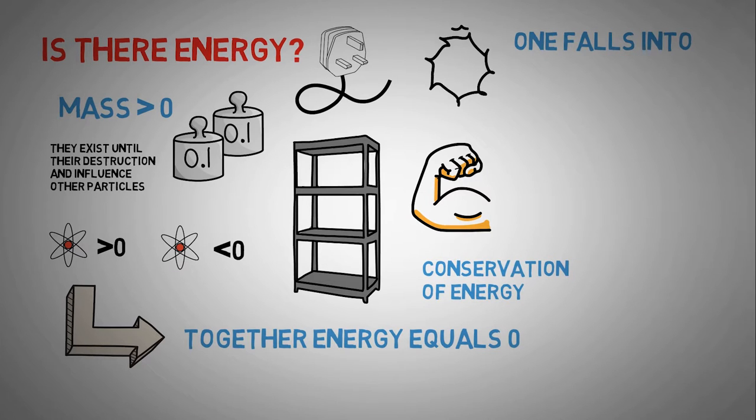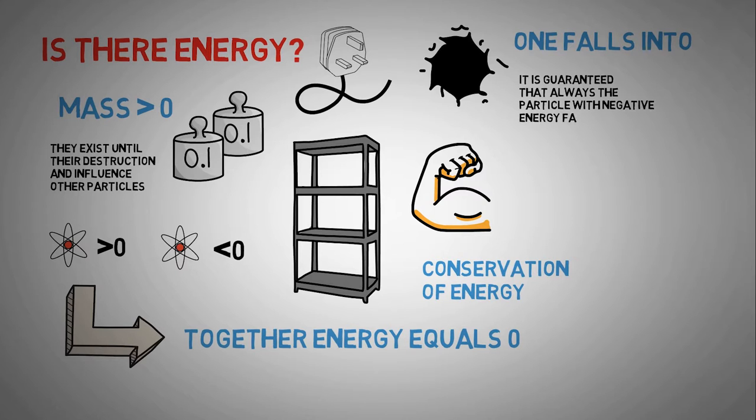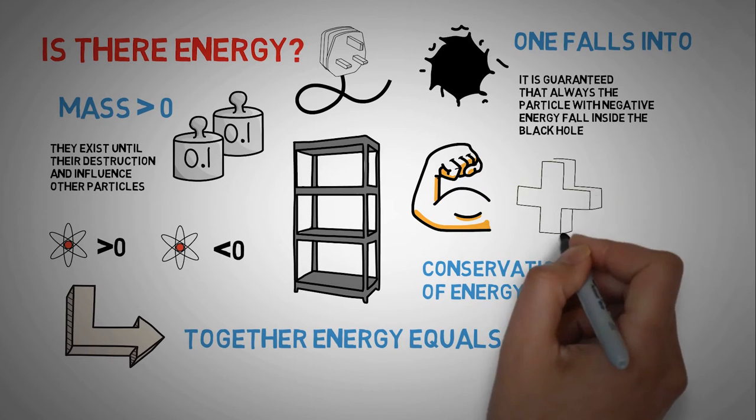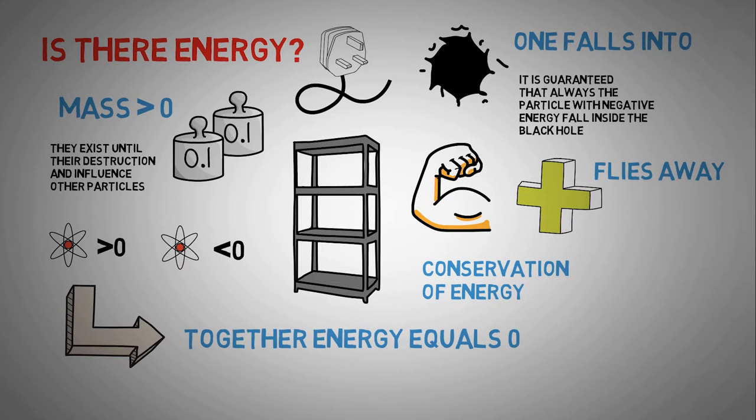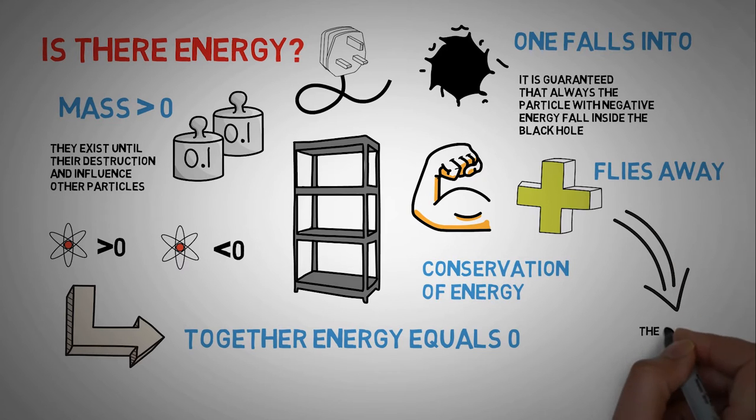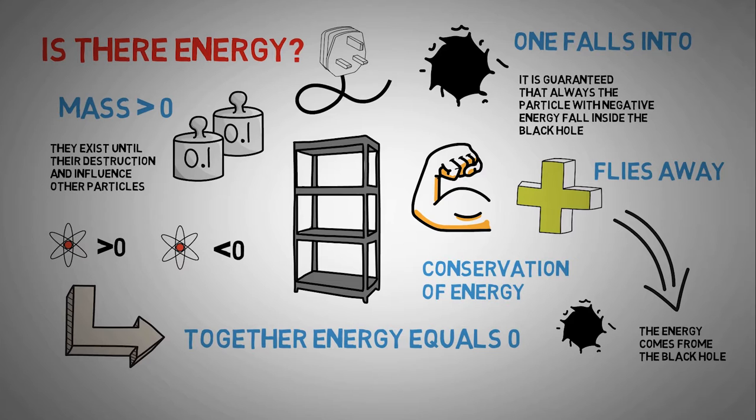But if one of those particles falls into the black hole, it becomes more complicated. It is guaranteed that always the particle with negative energy falls into the black hole, while the other one, equipped with positive energy, flies away. It can be interpreted that the energy for the now real particles comes from the black hole. No matter how we interpret this, as a result of the negative energy dropping into the black hole, it shrinks and comes consequently closer to its own destruction.